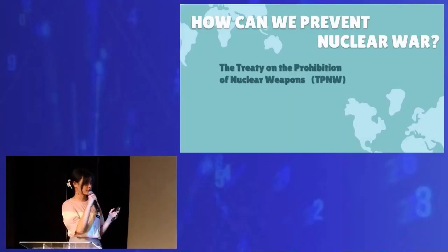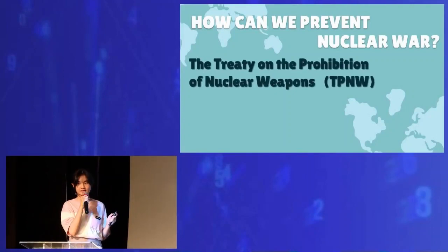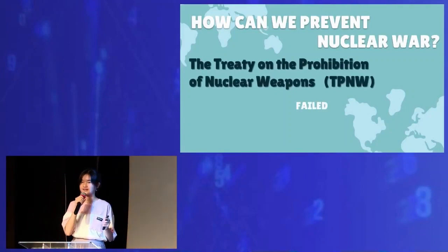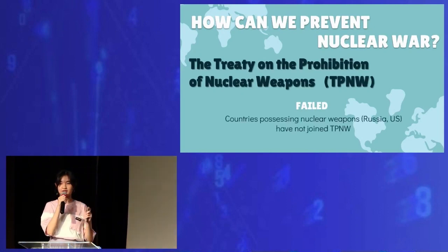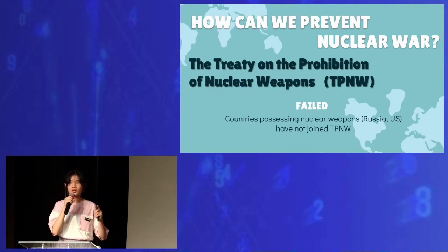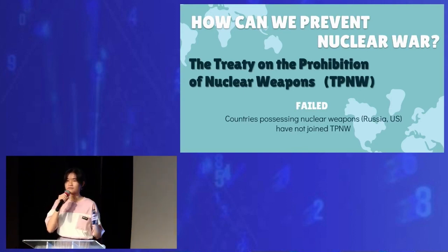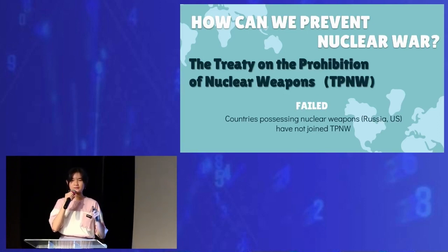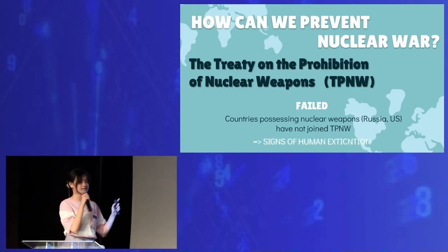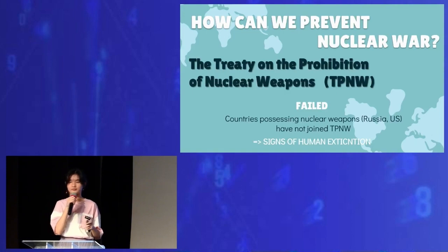The Treaty on the Prohibition of Nuclear Weapons failed because countries possessing nuclear weapons, such as the US or Russia, have not joined the TPNW. This means they wanted to keep their nuclear weapons ready. For their own benefits, they ignored the safety of innocent people, and that is another sign of human extinction.